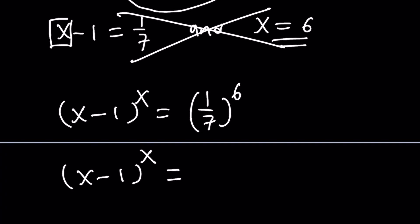First of all, I don't want this to be a fraction. So let's write it as 7 to the power negative 6. Makes sense? The rule is 1 over x to the power n can be written as x to the power negative n.